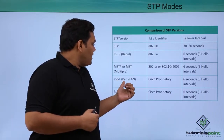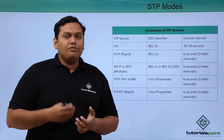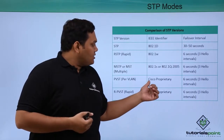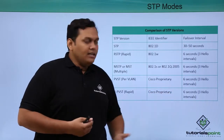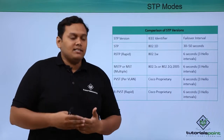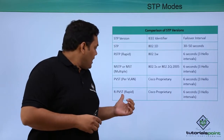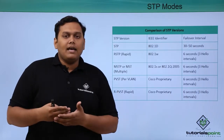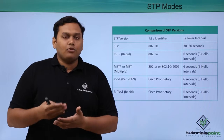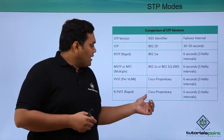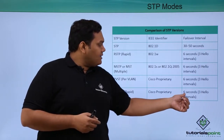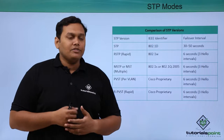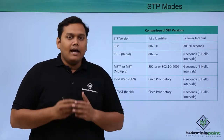PVST, Per VLAN Spanning Tree Protocol, is Cisco proprietary with a hello interval of 6 seconds. Rapid PVST, Rapid Per VLAN Spanning Tree Protocol, is also Cisco proprietary with a failover interval of 6 seconds, which is 3 hello intervals.